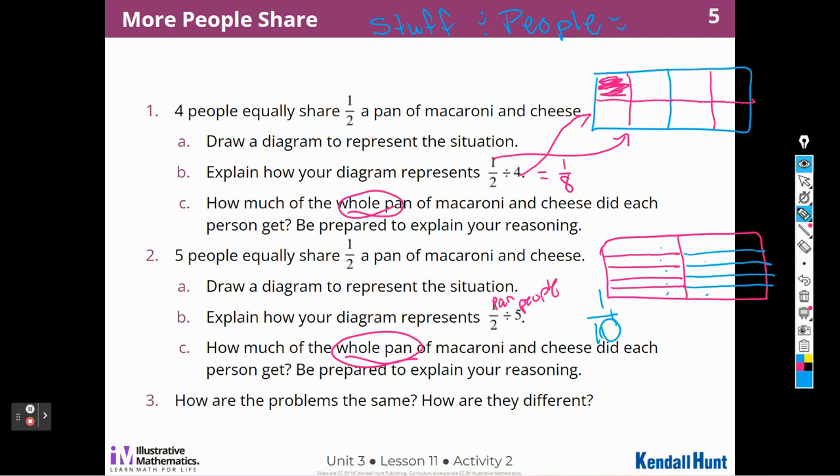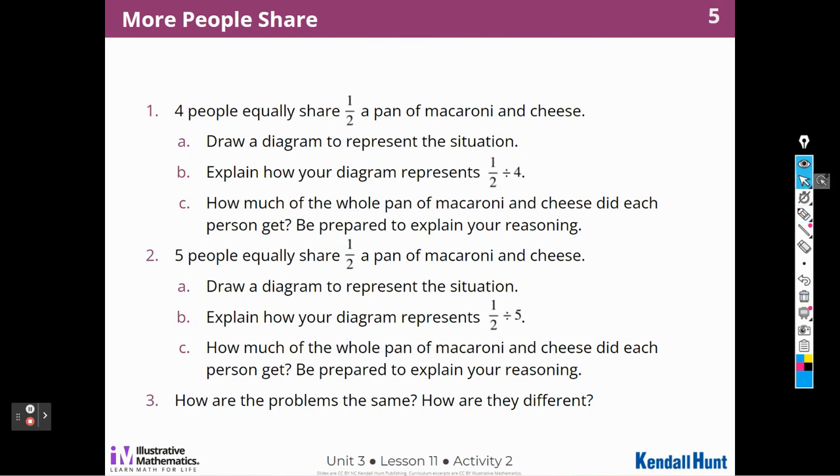How are the problems the same, and how are they different? Well, both situations are about a half a pan of macaroni. But this one has more people sharing it, so they're going to get less macaroni and cheese. Does that make sense? When four people share it, they get one-eighth of the whole pan, so they get a bigger piece. When five people share, they get one-tenth of the pan. Alright. Good thinking today. Let's move on.